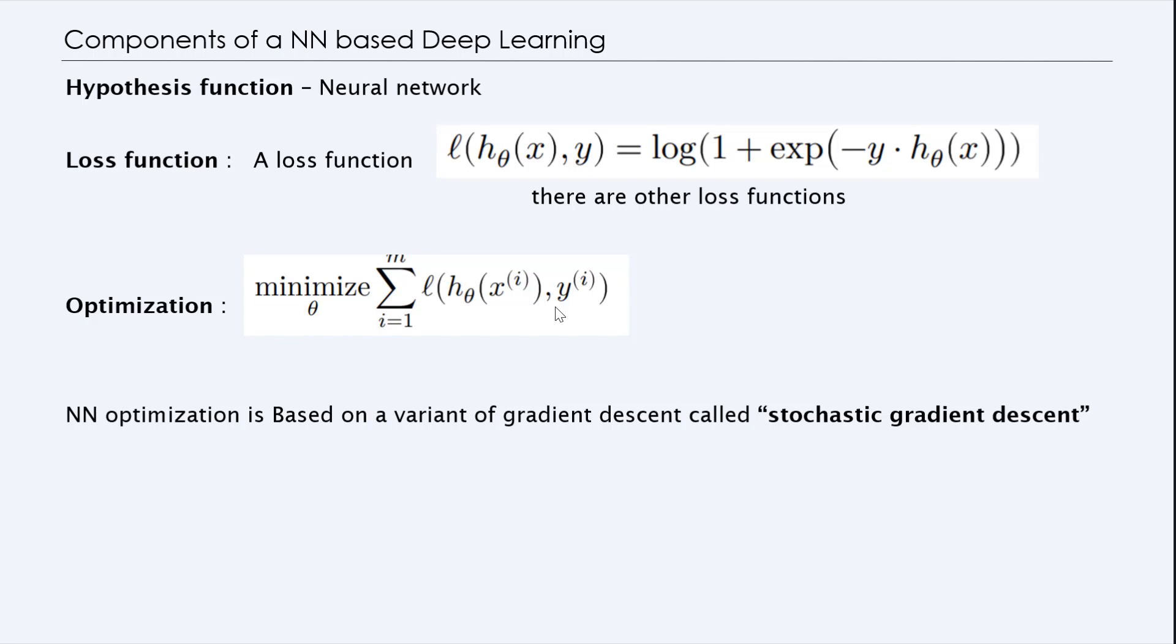So the optimization problem is minimizing this L(h_theta(x)) with respect to y_i. So neural network is a supervised learning method where we feed the data, such as let's say you have a set of pictures, and you feed that into the network to learn about these pictures. These pictures are labeled, and therefore we can find that out. So optimization of neural network is based on a variant of the gradient descent method called stochastic gradient descent. We'll talk about that in a little bit.